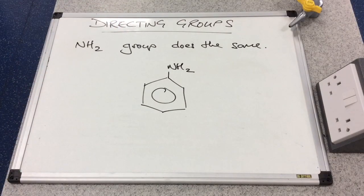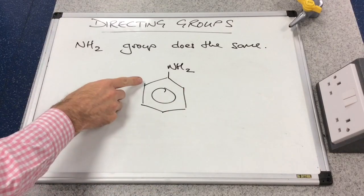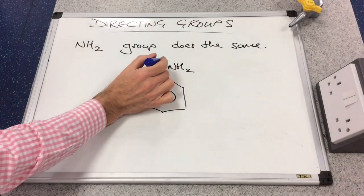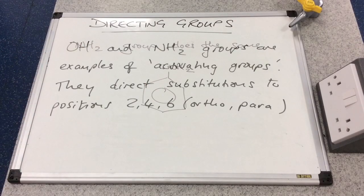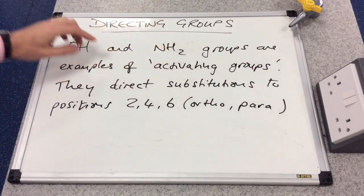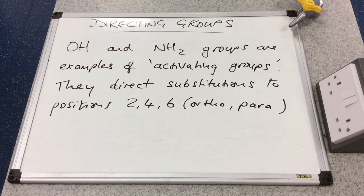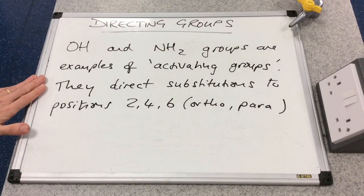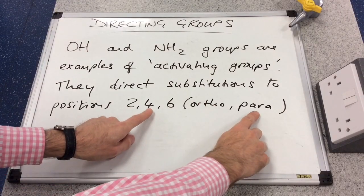It's worth noting that the NH2 group does the same as the OH group. With phenylamine reacting with chlorine, substitution occurs at positions 2, 4, or 6. This is because the nitrogen has a lone pair just like the oxygen, and it can do exactly the same thing. In summary, OH and NH2 are both activating groups — their lone pairs become delocalized, increase the electron density, and direct substitutions to positions 2, 4, and 6, i.e., the ortho and para positions.